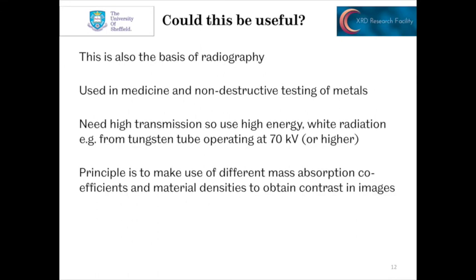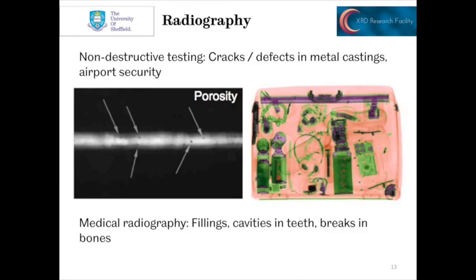This principle is also the basis of radiography, as used in medicine and in non-destructive testing of materials. In these examples, you would use high energy for high transmission — you need to get the X-rays through the specimen or through the person onto a detector, so you tend to use high energy, 70 kV or higher, with tungsten tubes. The principle is to make use of different mass absorption coefficients and material densities to get contrast in imaging. We see here some cracks in metal castings, some pores in the left-hand image, and in the right-hand image, the example of airport security scanning a suitcase.